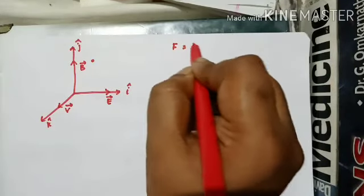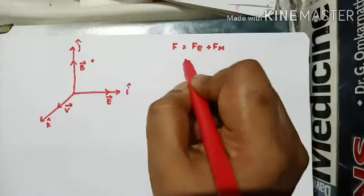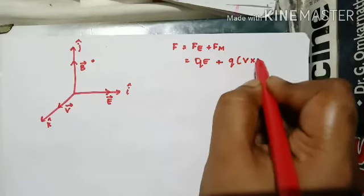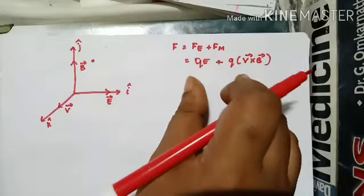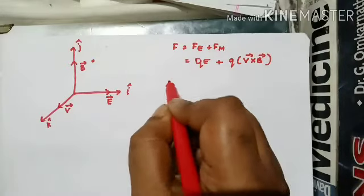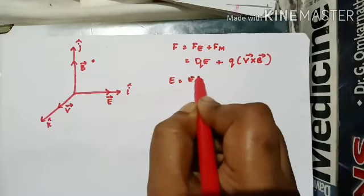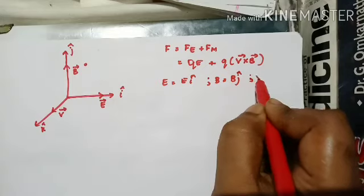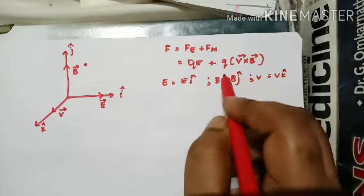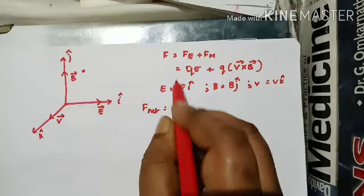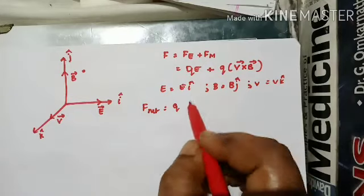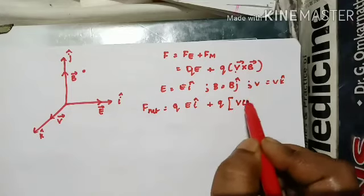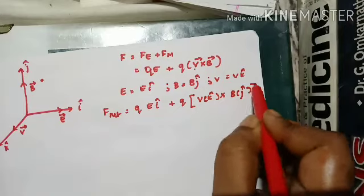The net force is due to both electric and magnetic field. The force due to electric field is Q·E, plus due to magnetic field is Q·(V×B). Now representing this in vector form: E is only in the X direction, so E is written as Eî; B is written as Bĵ; and V is written as Vk̂. Replacing these, F_net = Q·Eî + Q·(Vk̂ × Bĵ).